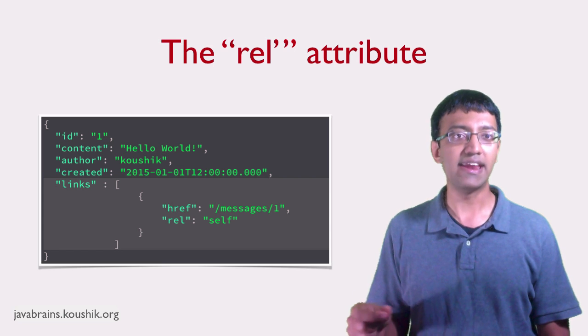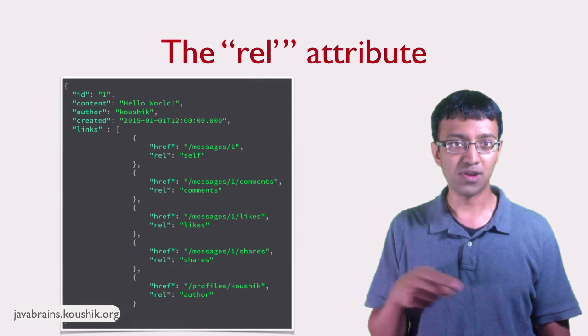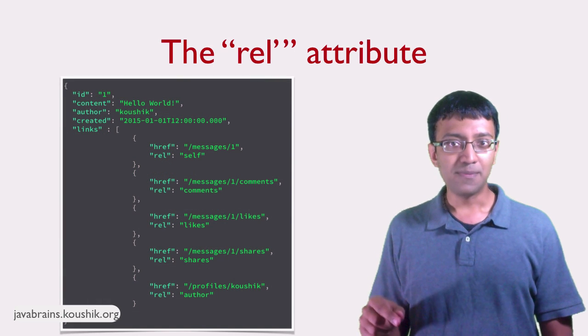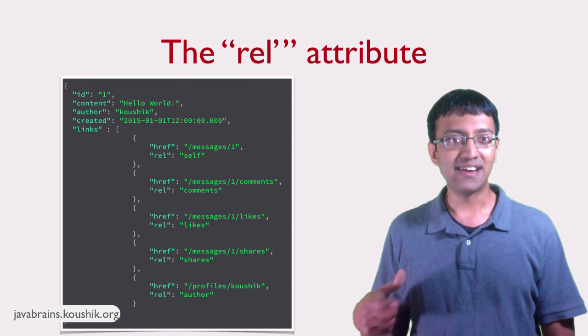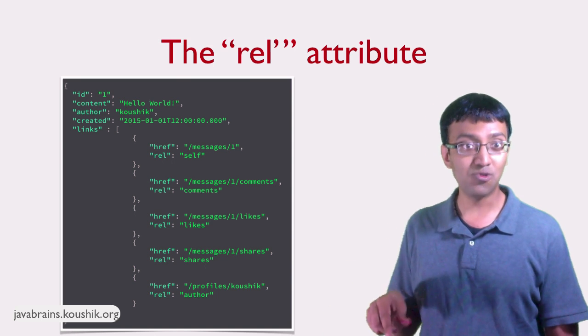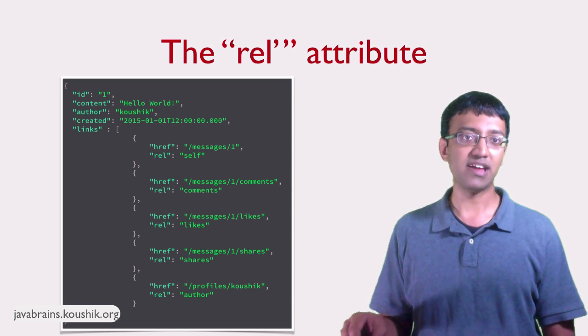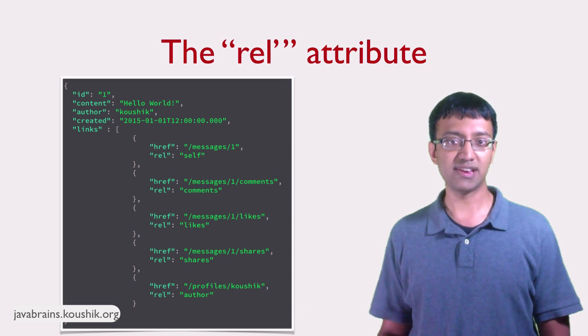This could be extended by adding new links and assigning the right rel values for each, right? You could assign the appropriate rel values. So let's say you want to add a link for getting all the comments. So you could add a href, which is another element in this links attribute. And the rel could be comments. You want to add the likes URL. You could add that as a href and the rel for that would be likes and shares and so on. You could also have profiles. And then the rel for that would be the profiles or the author or something like that.